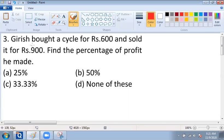It is given that Girish bought a cycle for Rs. 600. So the cost price of the cycle is equal to Rs. 600.